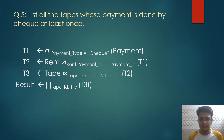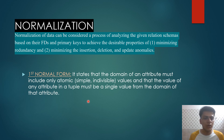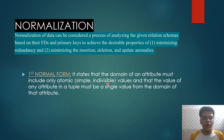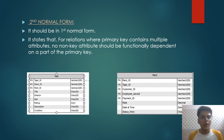Moving forward, we will do normalization. Normalization of data can be considered as a process of analyzing given relational schemas based on their functional dependencies and primary keys to achieve desirable properties — minimizing redundancy and minimizing insertion, deletion, and update anomalies. First normal form states that the domain of an attribute must include only atomic values; it cannot have any multi-valued attribute. In all relations in our schema there is no single attribute with multiple values, so our schema is already in first normal form.